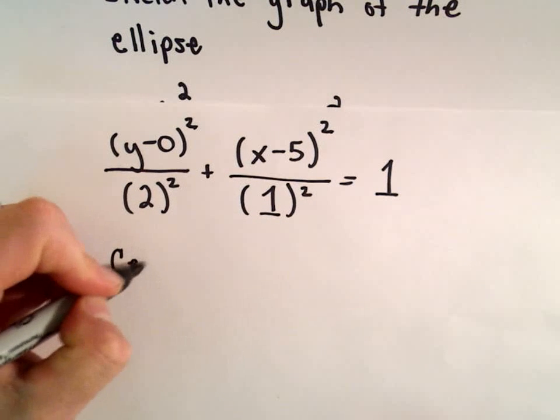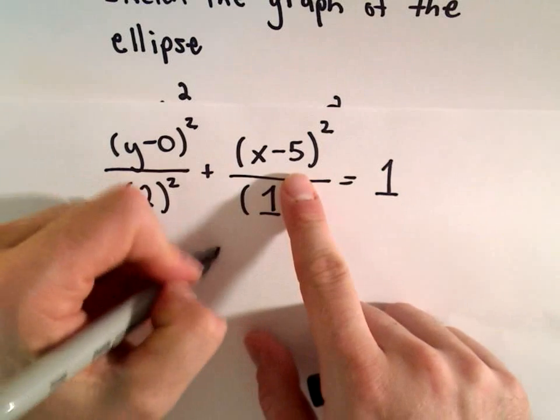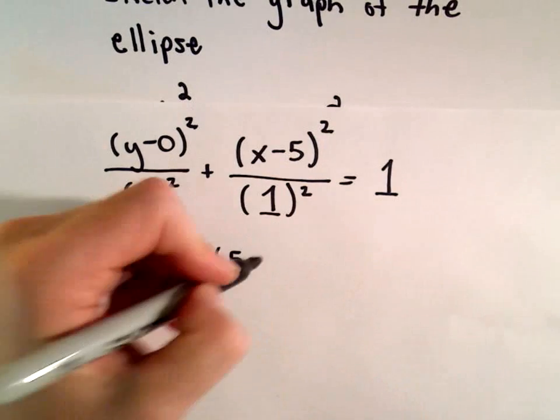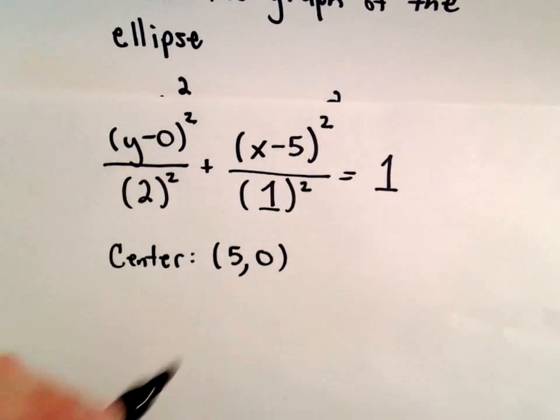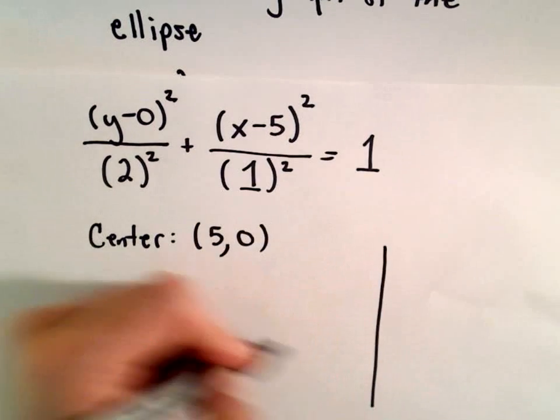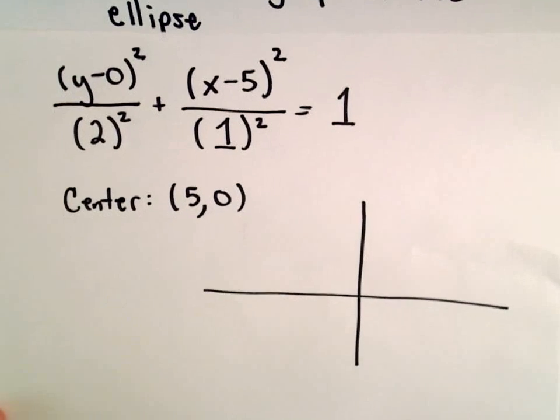So the center of our ellipse is going to be positive 5 comma 0. We can now read that off from our standard form. And to get the vertices, I'm going to go ahead and start making a rough little sketch based on this and point out some other things as well.